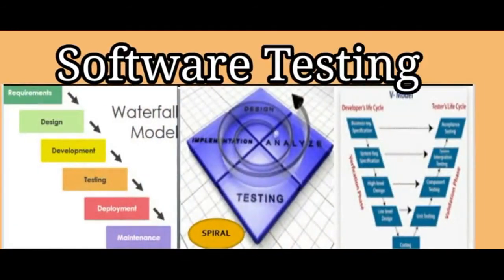Software Testing. Software bugs always exist in any software model due to its complexity. The defects that occur in complex system designs can never be completely ruled out. Software testing is the process of validating and verifying a computer program, application or product that works as expected by the customer. Some of the commonly used software testing types are waterfall model, spiral model and v-model.